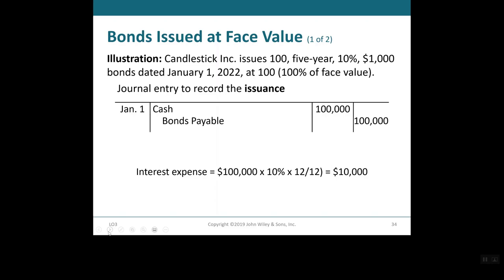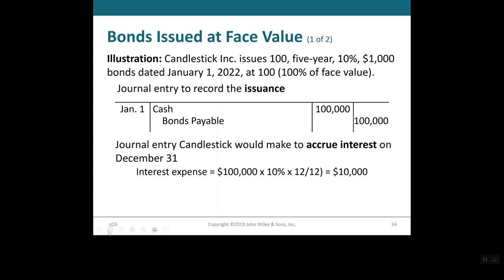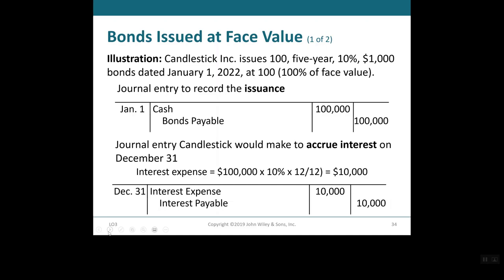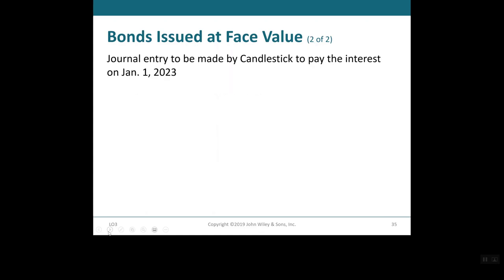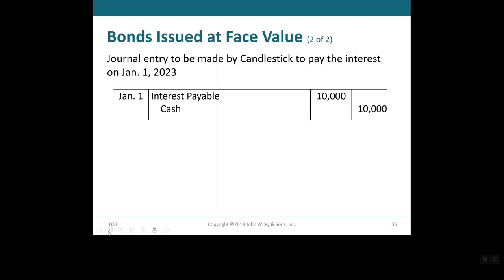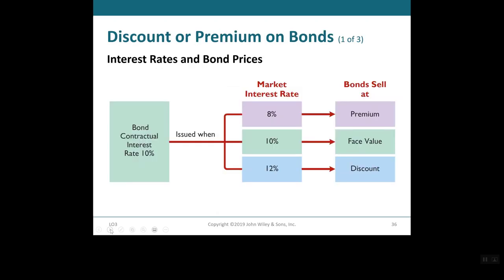To record the interest, we have interest expense increasing as an expense for $10,000 and interest payable of $10,000. On January 1 when the interest is actually paid, the entry will debit interest payable for $10,000 and credit cash for $10,000.